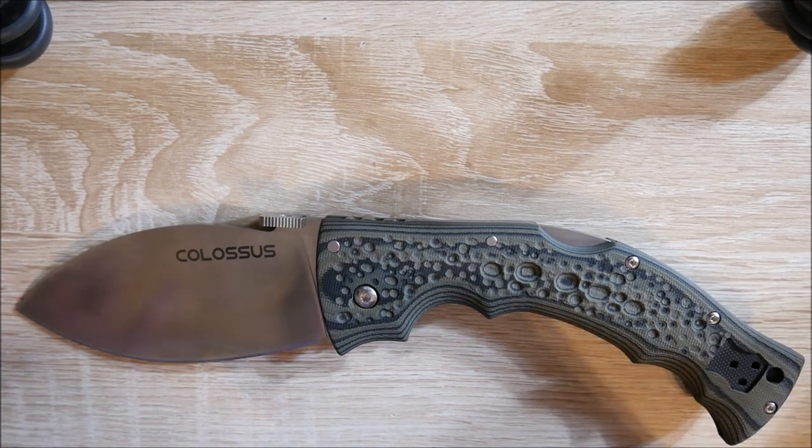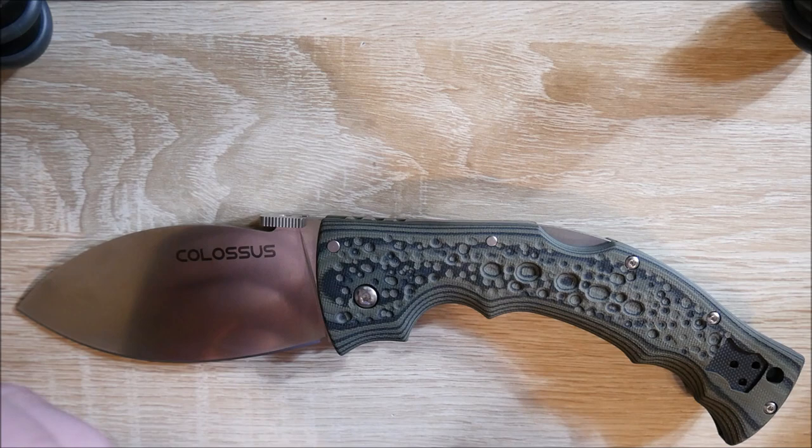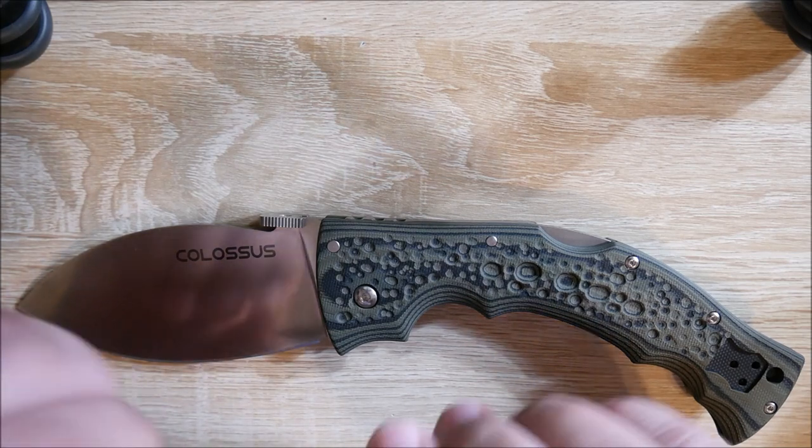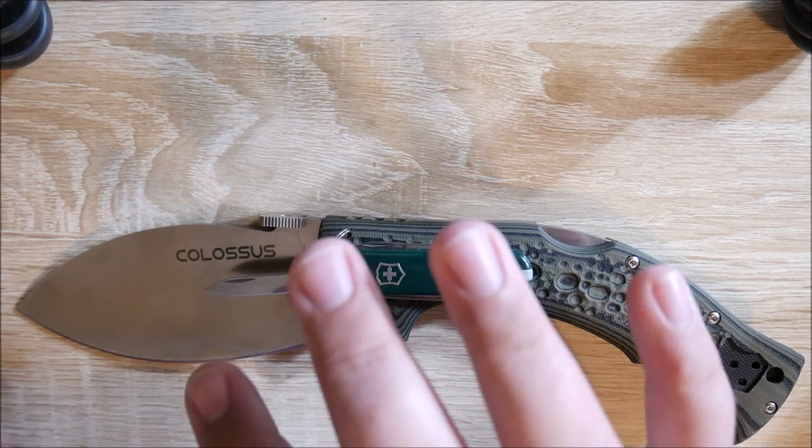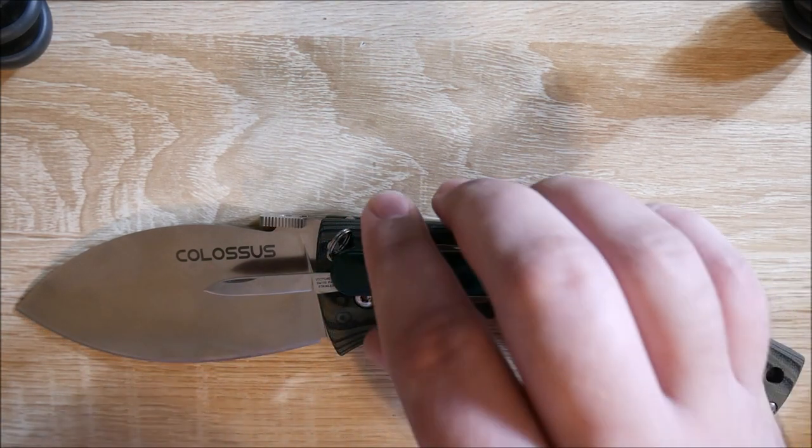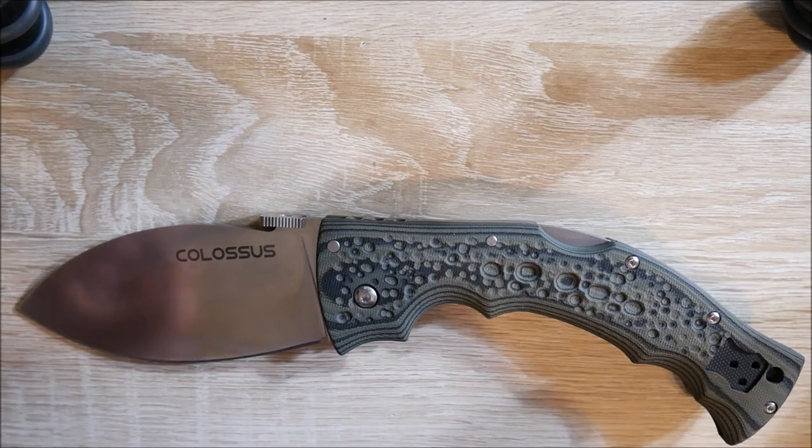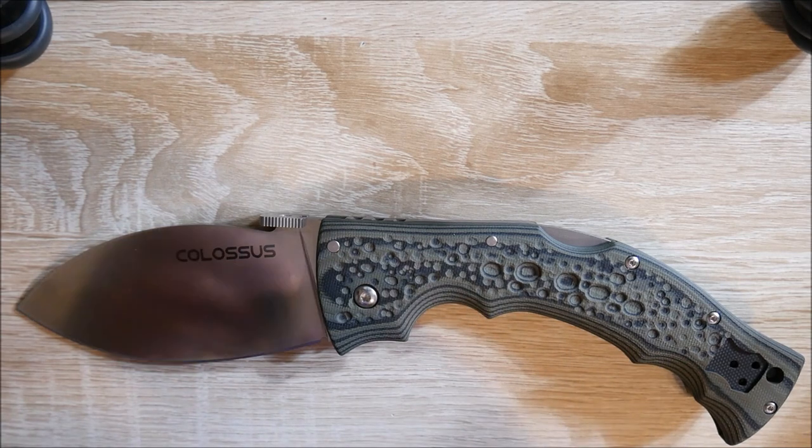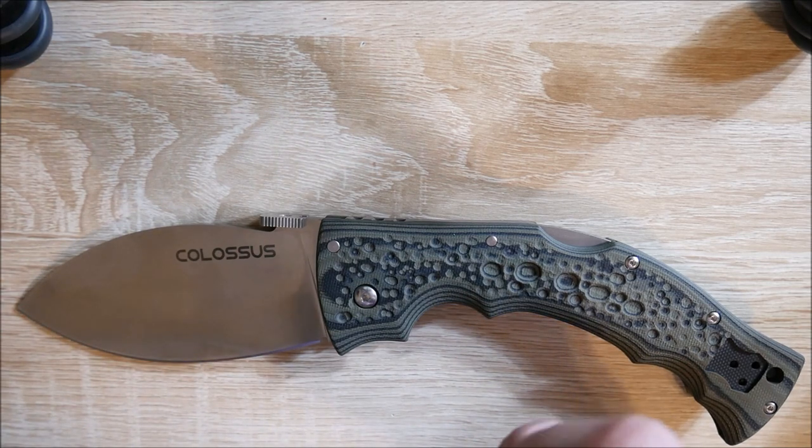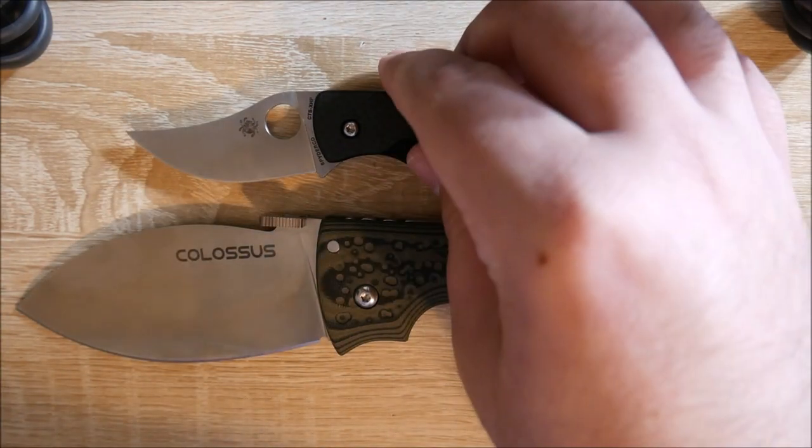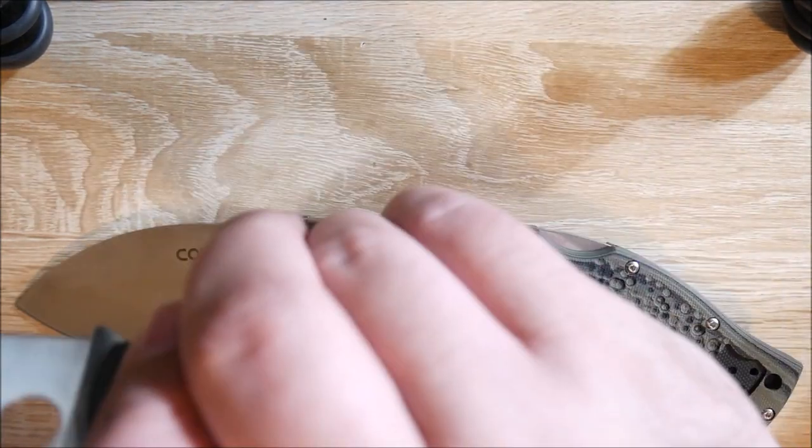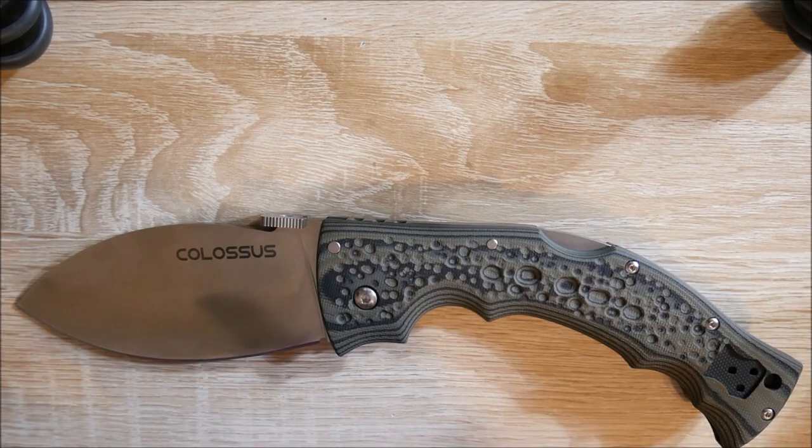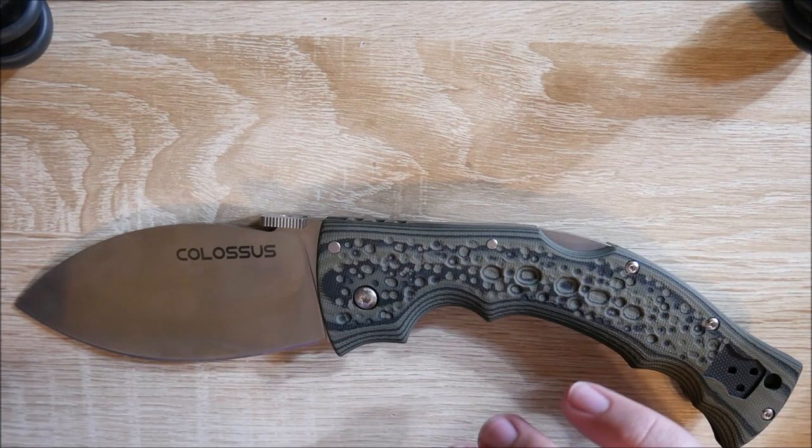First up, the Victorinox Classic. I'm just going to kind of set it right on top there. This is a huge knife, seriously, it's ridiculous. Let's go with something slightly bigger. This is the Spyderco Reinhold Rhino. And honestly, I can get a good three and a half finger grip on this knife, and it's still absolutely dwarfed by the Colossus here.